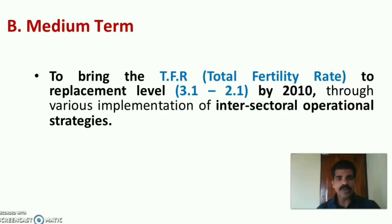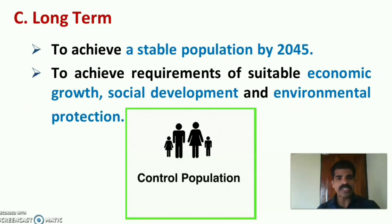Medium-term objective: To bring the TFR (total fertility rate) to the replacement level, that is from 3.1 to 2.1, by 2010, through inter-sectoral operational strategies and coordination. Long-term objectives: To achieve a stable population in India by 2045, and to achieve requirements of suitable economic growth, social development, and environmental protection of the country.